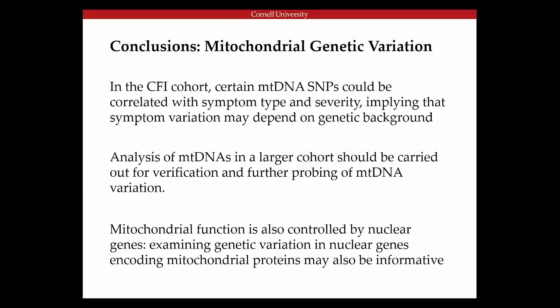We have several caveats on the study. One is that we really need to analyze mitochondrial DNAs in a larger cohort to verify this and further probe the mitochondrial DNA variation connection. Most population genetic studies don't use merely hundreds of patients and controls — they use thousands. So at some future date, I would hope a much larger cohort of patients and controls could be analyzed with respect to population genetics. I would also like to mention that mitochondrial function is also controlled by nuclear genes. We only examined the mitochondrial genes, a much smaller set. It would be important to look at genetic variation in nuclear genes that encode mitochondrial proteins, as this could also be informative.